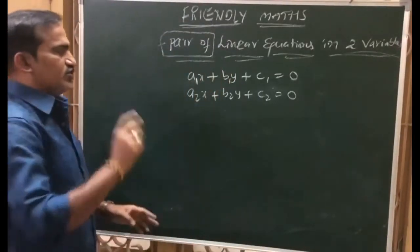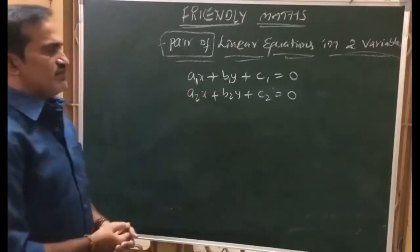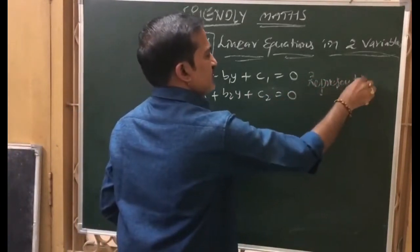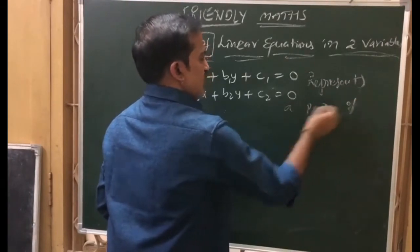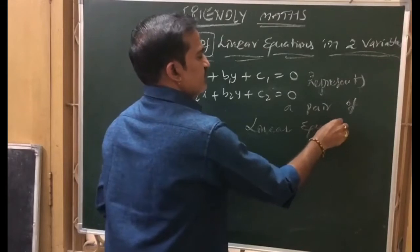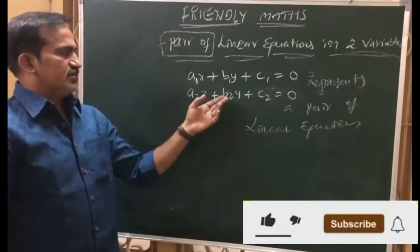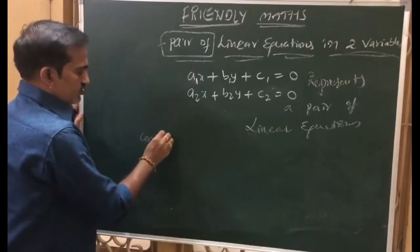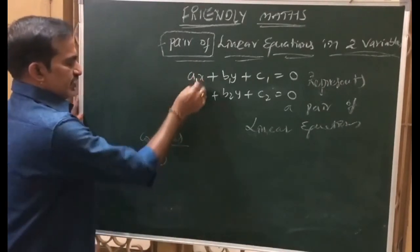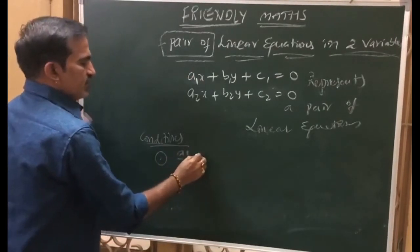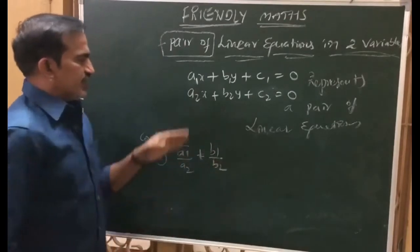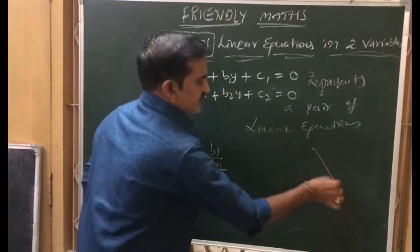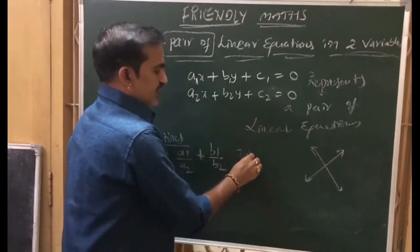Given a1x plus b1y plus c1 is equal to 0, and a2x plus b2y plus c2 is equal to 0, representing a pair of linear equations — by observing the coefficients we can decide which type of lines are given. The first condition: if a1 by a2 is not equal to b1 by b2, meaning the ratio of x coefficients is not equal to the ratio of y coefficients, then these lines are intersecting lines.